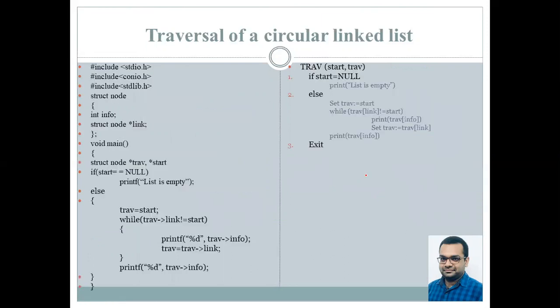So this is the simple C program where we check if start is null, so therefore we print that the list is empty. Else we initialize traversal with the value of the first node. We perform checks into the while loop, that is till the time traversal link is not equal to start. We print the traversal's info and increment the value of the traversal. Upon reaching the last node, we print out its information part.